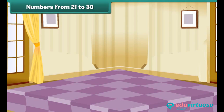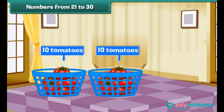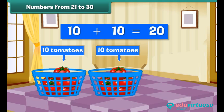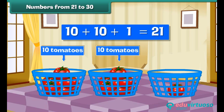Numbers from 21 to 30. Look at these two baskets of ripe tomatoes. Each basket contains ten tomatoes. Therefore, we have two groups of ten, which means we have 20 tomatoes. Here is an empty basket. Let us place a tomato inside it. We have two tens and one, that is 21 tomatoes.